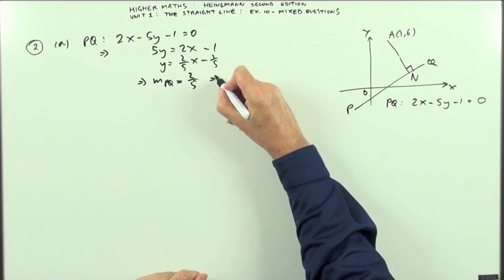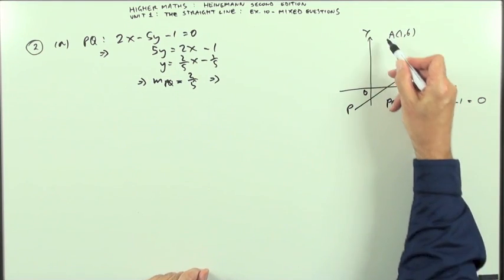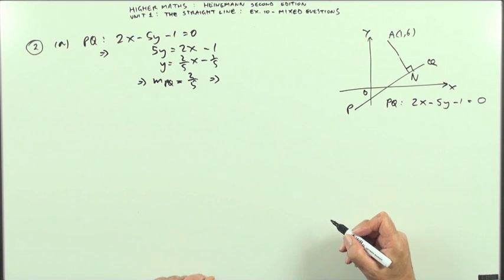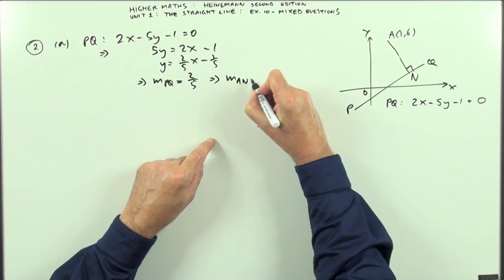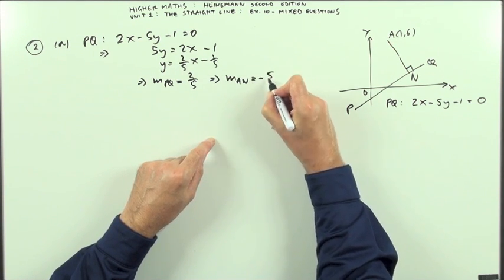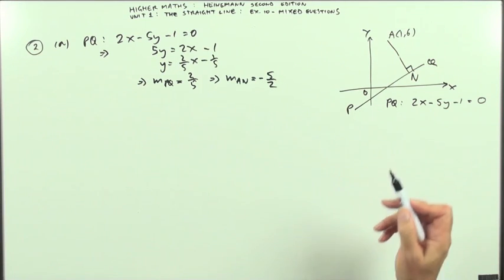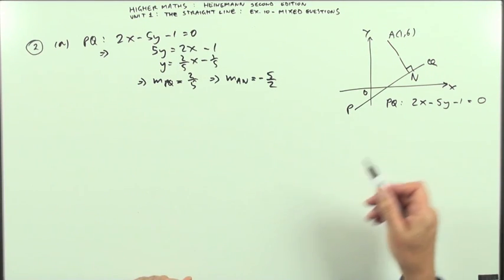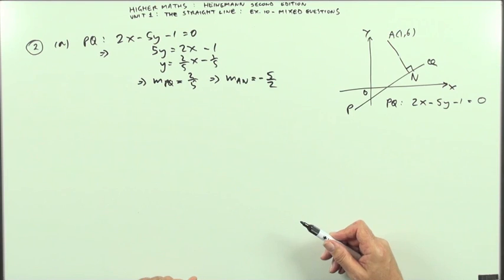Now, that means that the line AN, as I've called it, the perpendicular one, that means the gradient of AN is going to be negative 5 over 2 since it's perpendicular to it and the product of them should come to negative 1.